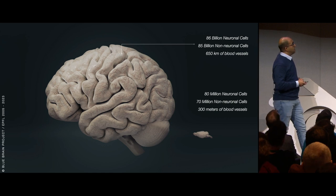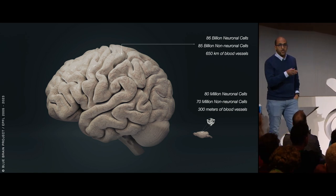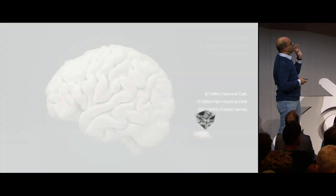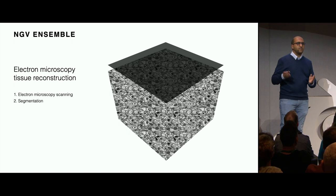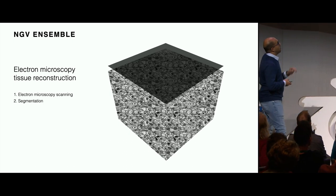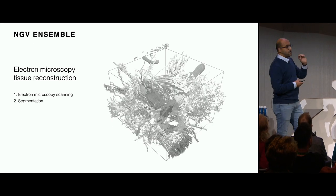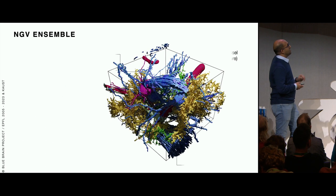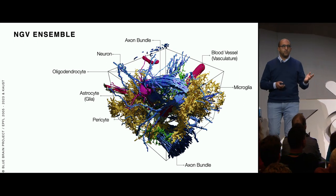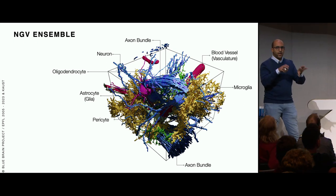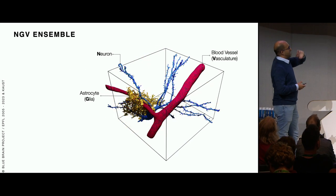In reality, we image the mouse brain using different microscopy techniques like optical microscopes or electron microscopes, and then we reconstruct models that way. This takes us to what's called the NGV - the Neural Glia Vasculature ensemble. We get an EM microscopy stack, scan it, and segment the different objects until we build these models. It's very complicated - this alone could take up to several months.